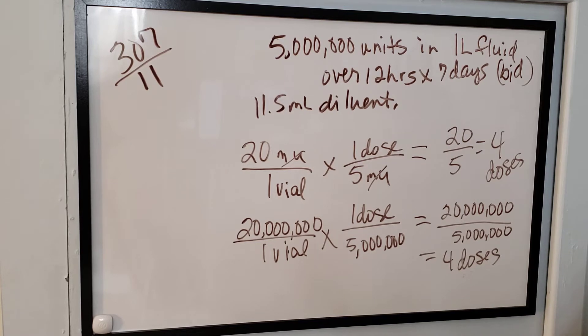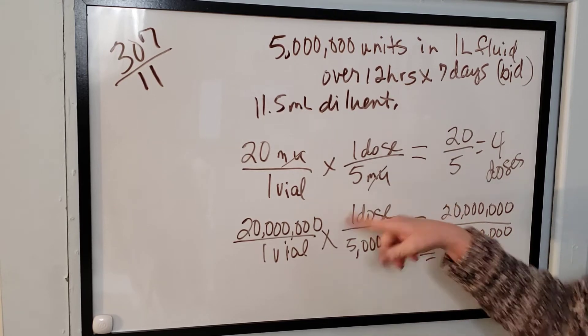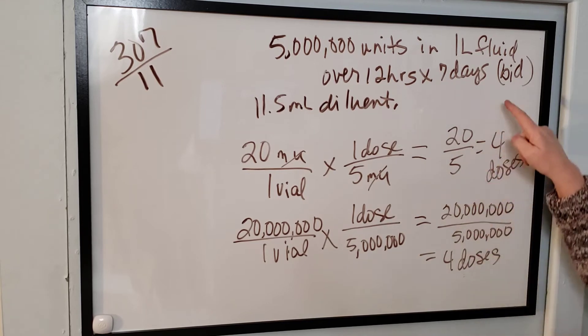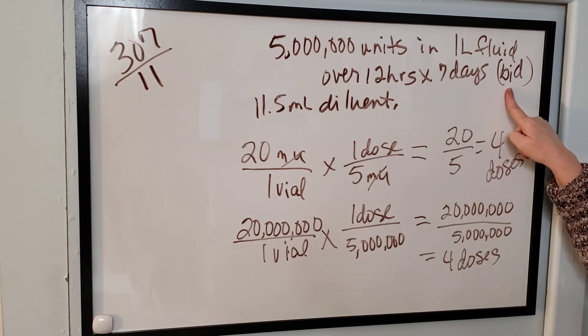Now what is the day's supply from one vial? If they're getting four doses, how many are they? Remember that's your total. Four doses divided by the maximum amount per day. How many doses are they getting a day? Remember the BID up there? Yes, two.